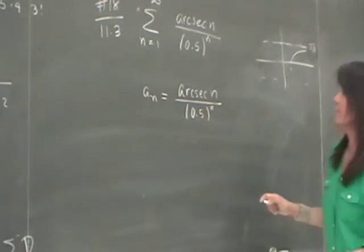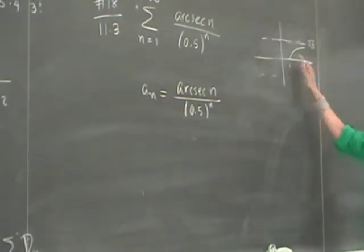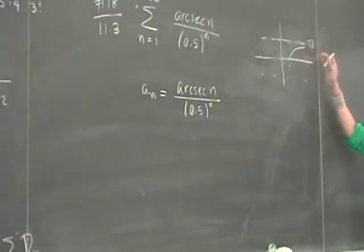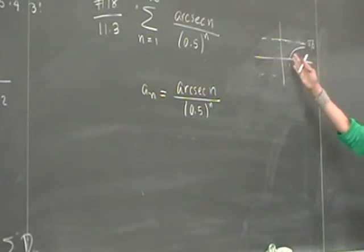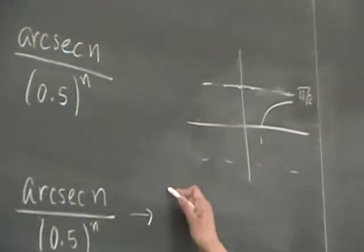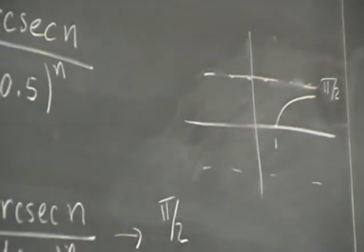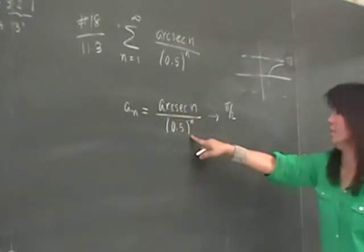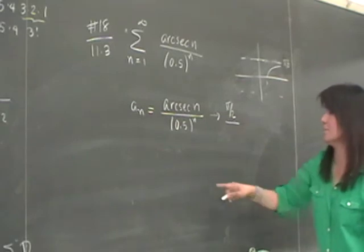Well, as n becomes large, and I have here a part of the graph of arc secant of x, what happens as n becomes large? The numerator will approach pi over 2. The denominator, as n becomes large, becomes what?